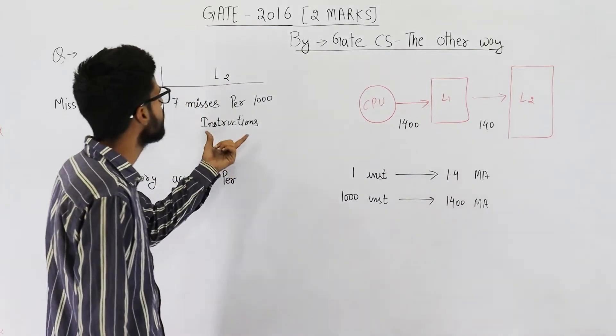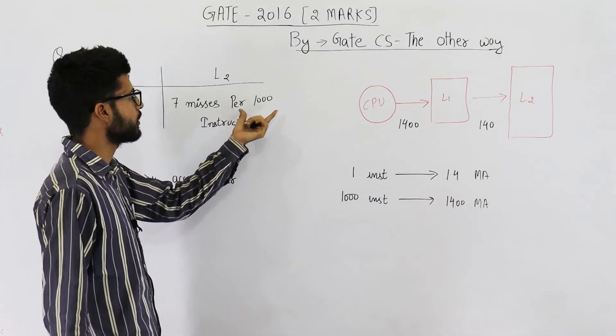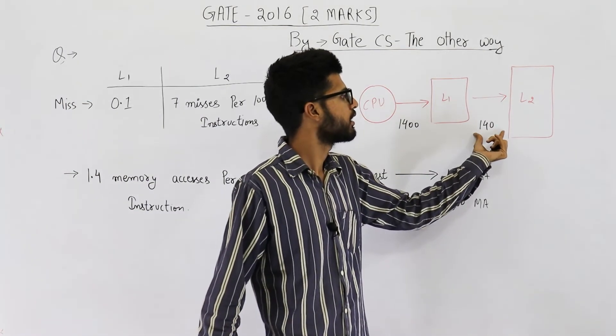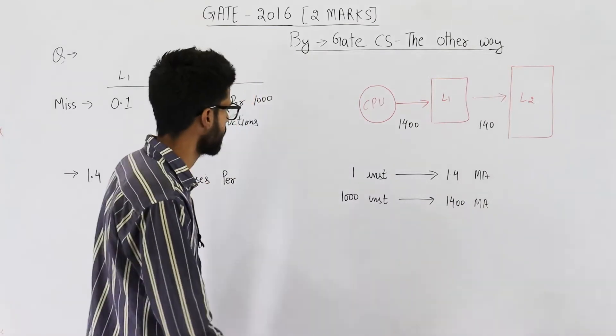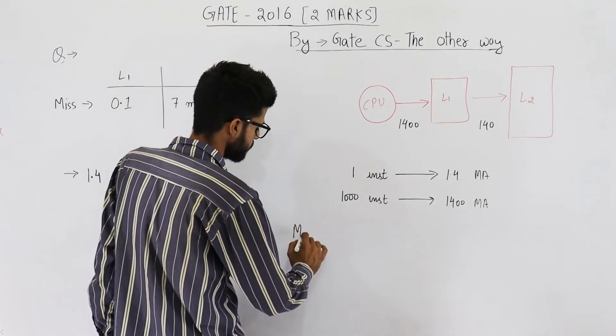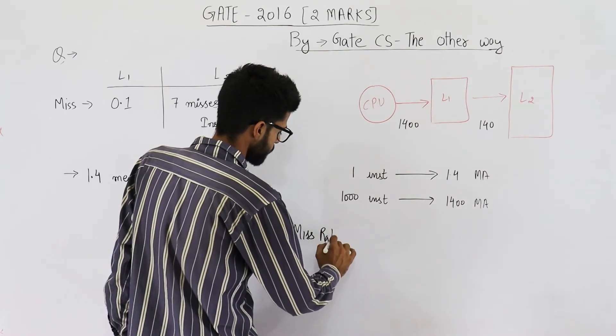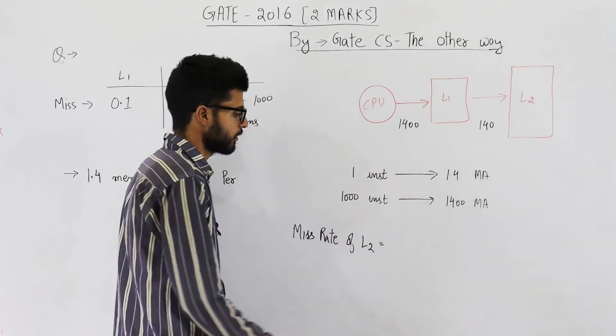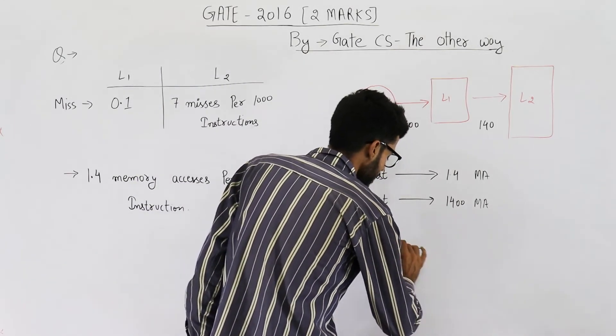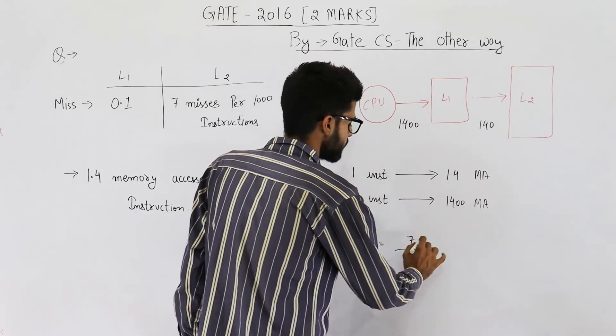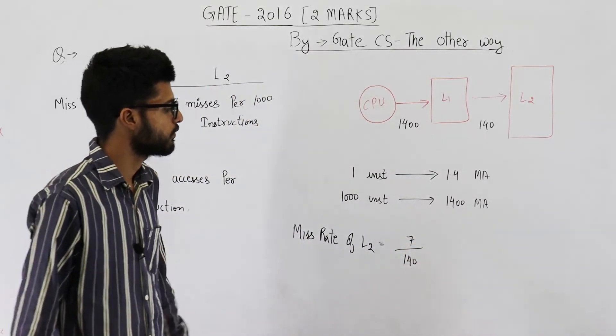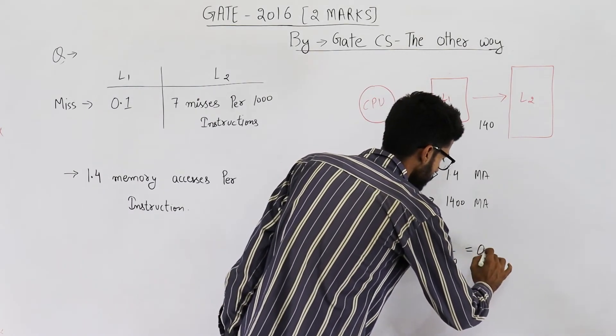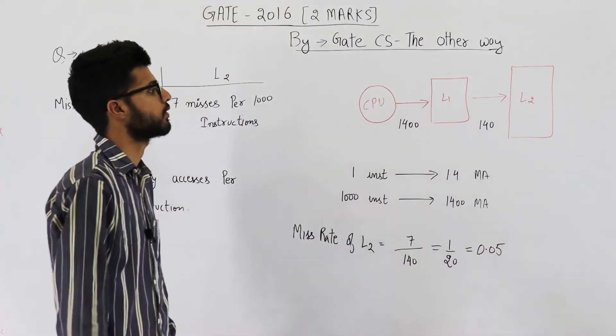Now they are saying out of 1000 instructions there are 7 misses. Can we say out of 140 accesses there are 7 misses? That means miss rate is 7 divided by 140. So 7 twos are 14, this comes out to be 1 by 20 which will be 0.05. This is miss rate of L2.